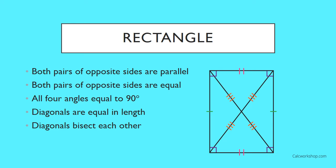For the rectangle: both pairs of opposite sides are parallel — this side is parallel to the opposite side, and the same for the other pair. Both pairs of opposite sides are equal, as indicated with the little stripes. All four angles are equal to 90 degrees. The diagonals are equal in length — the distance from each vertex to the center is the same for all four segments. The diagonals also bisect each other.